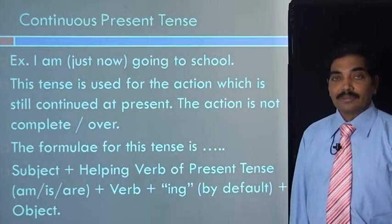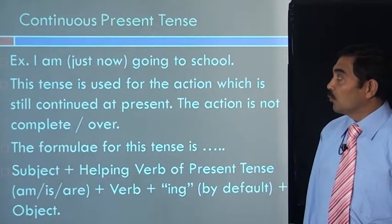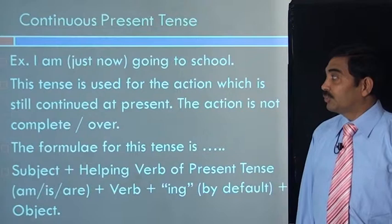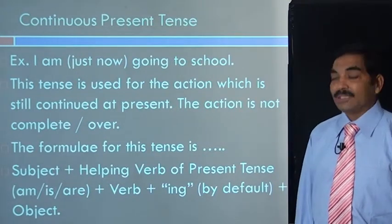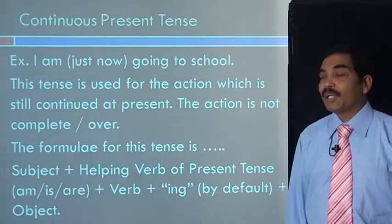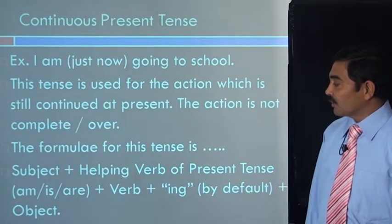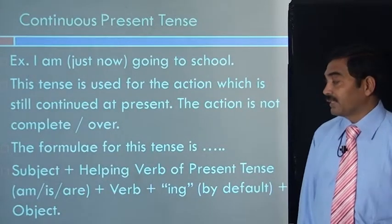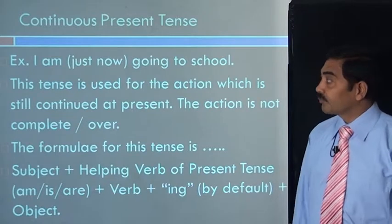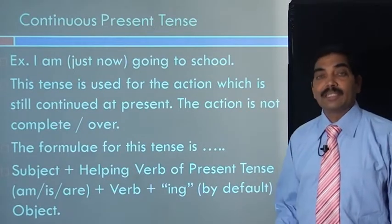Let us go to the next tense form, that is continuous present tense. Let us take an example: I am going to school. When we say I am going to school, we clearly mean I am just now going to school. That means the action is still continued. This tense is used for the action which is still continued at present; the action is not complete or not over. The formula for this tense is subject plus helping verb of present tense — that is am, or is, or are — plus verb, in this case go, plus ing, plus object, in this case to school.